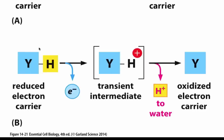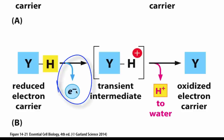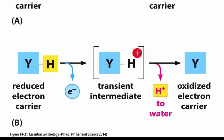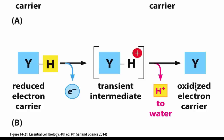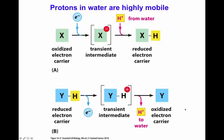The opposite reaction can also happen. The reduced electron carrier containing the proton donates an electron to another molecule that accepts it and becomes reduced, generating a transient molecule with a positive charge. That transient protonated molecule donates its proton to form a water molecule and is completely transformed into an oxidized electron carrier. So a redox reaction involves the concomitant acceptance and donation of electrons, but also of protons.